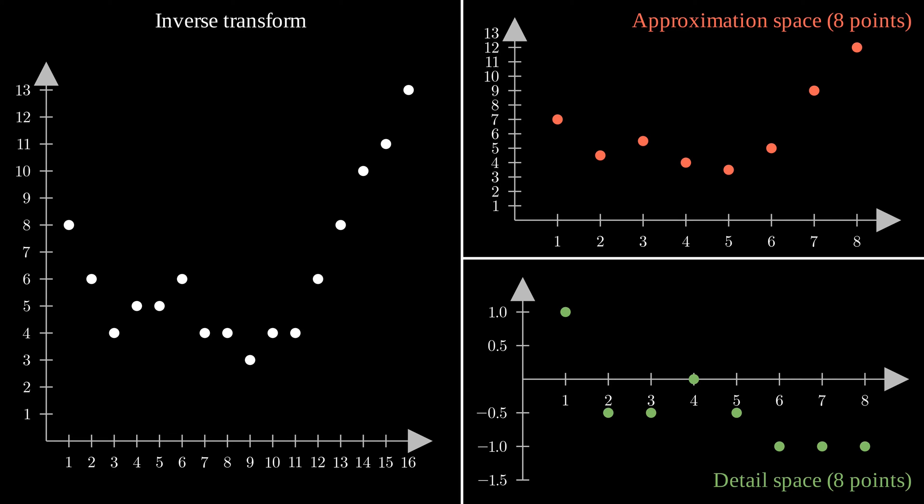And here we are. We computed our first wavelet transform, followed by an inverse transform. It uses our bases to decompose the signal. This wavelet transform is the most simple one. But we are not going to stop there.